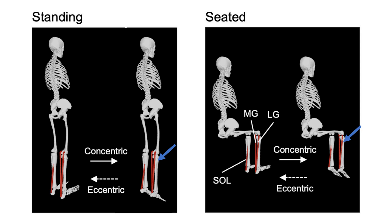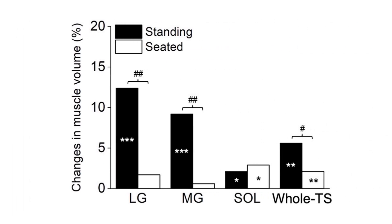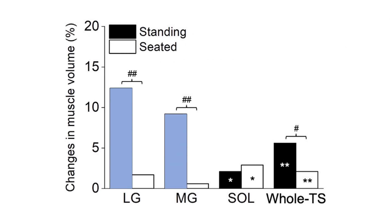However, the length of the soleus, which is the flatter lower calf muscle, is the same between both variations since it isn't influenced by knee position. After 12 weeks, both the lateral and medial heads of the gastrocnemius saw significantly greater increases in muscle volume in the leg performing standing calf raises compared with seated calf raises. However, the soleus experienced similar growth in both legs.